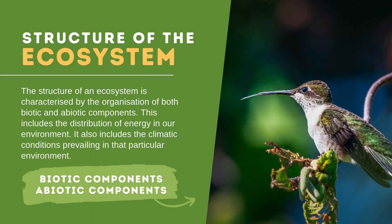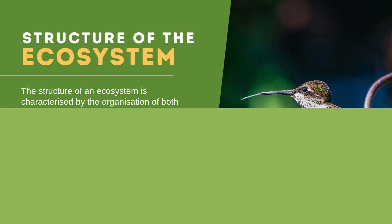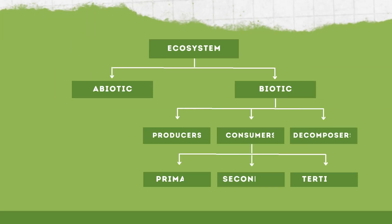Now let us see the structure of the ecosystem. The structure of an ecosystem is characterized by the organization of both biotic and abiotic components. This includes the distribution of energy in our environment, as well as the climatic conditions prevailing in that particular environment, and both biotic and abiotic components.